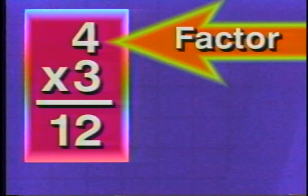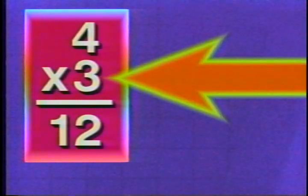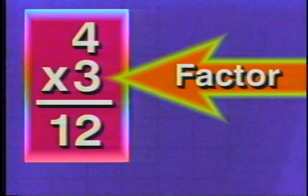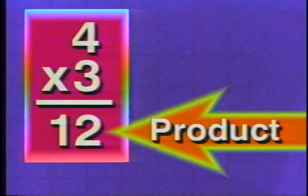4 plus 4 plus 4 is 12. Three groups of 4 are 12. 4 times 3 is 12. Now 4 is your first factor — it's where we start. Times 3 is the other factor — you can tell them apart. Now 12 is the product, the answer.